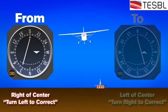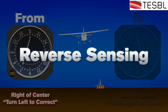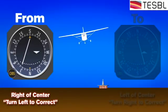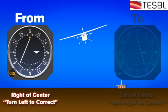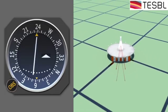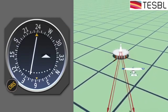This type of situation is called reverse sensing. If you were not aware that you had mistakenly entered the reciprocal radial into the instrument and tried to correct toward the center, you would actually fly further off course.